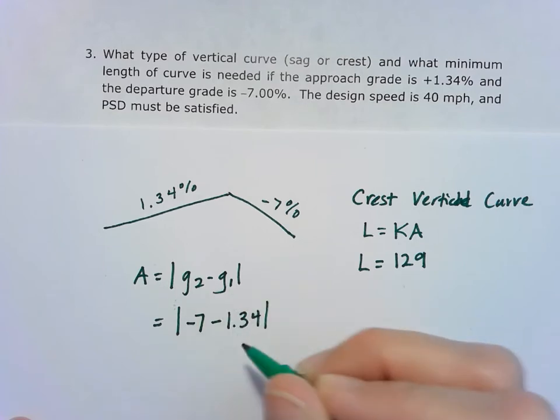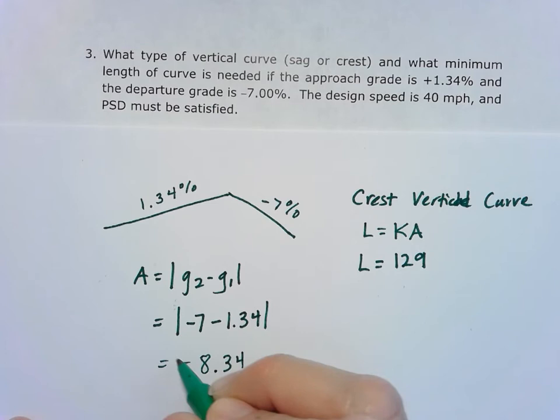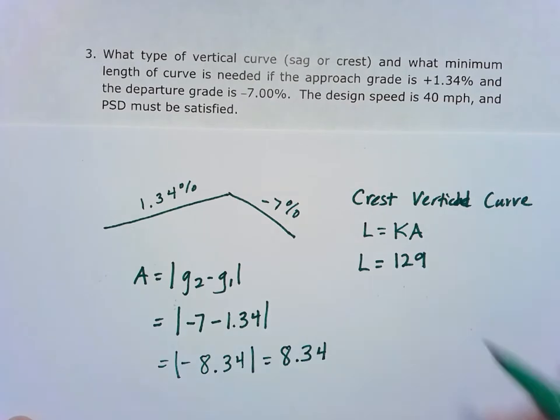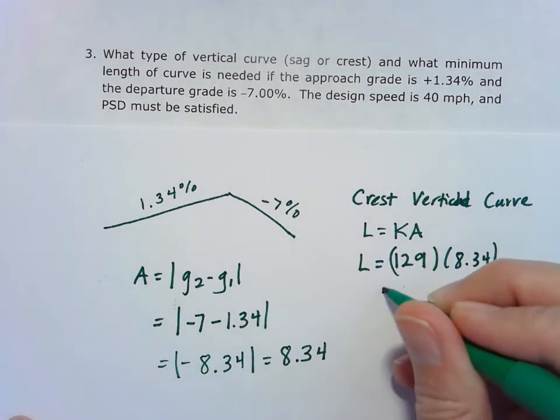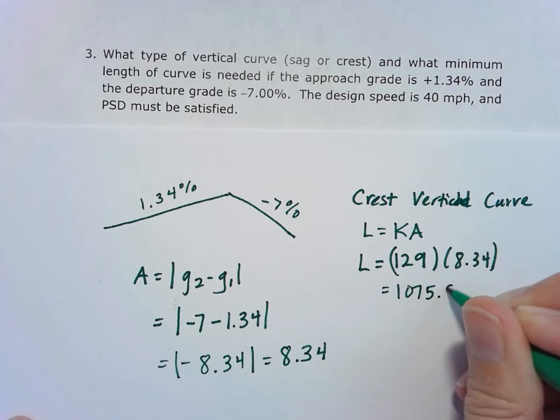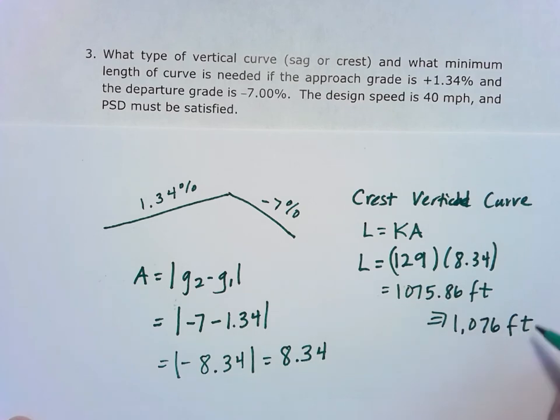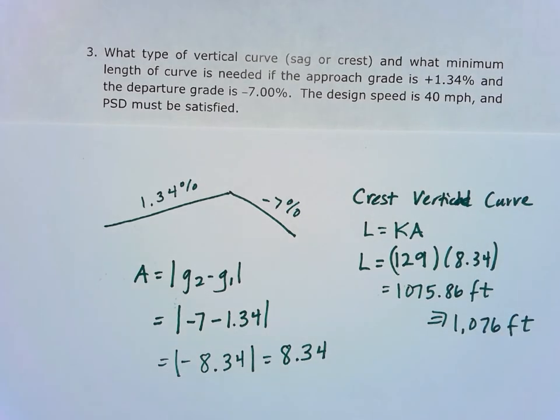We're subtracting that from there, so we get -8.34, but that's absolute value, so my A equals 8.34. So I have 129 times 8.34, which gives me an answer of 1075.86 feet, which I'll go ahead and round to 1076 feet for the length for that crest vertical curve.